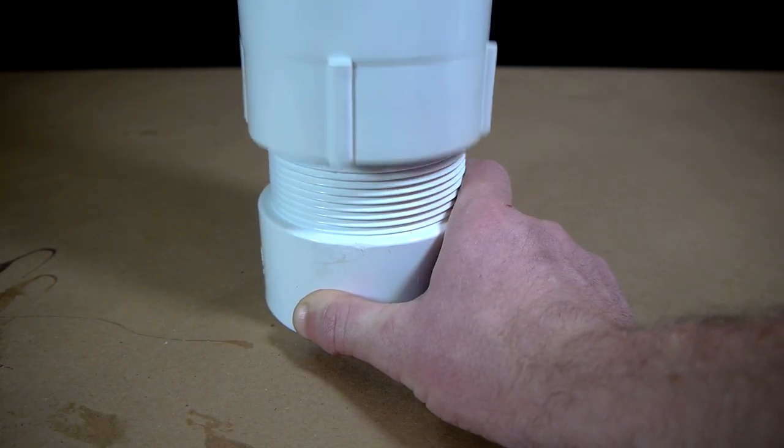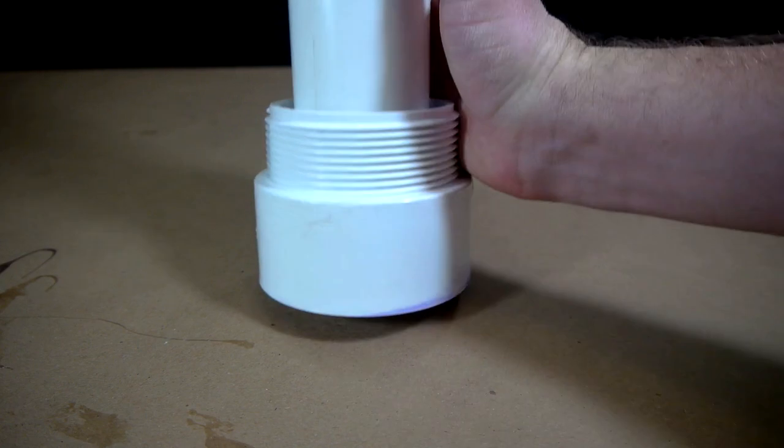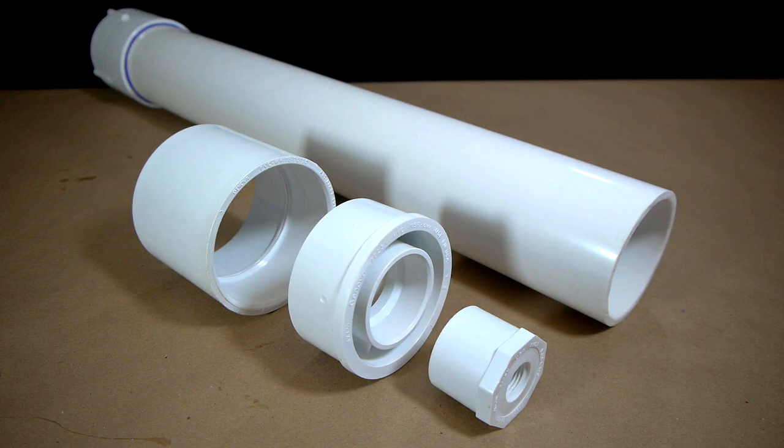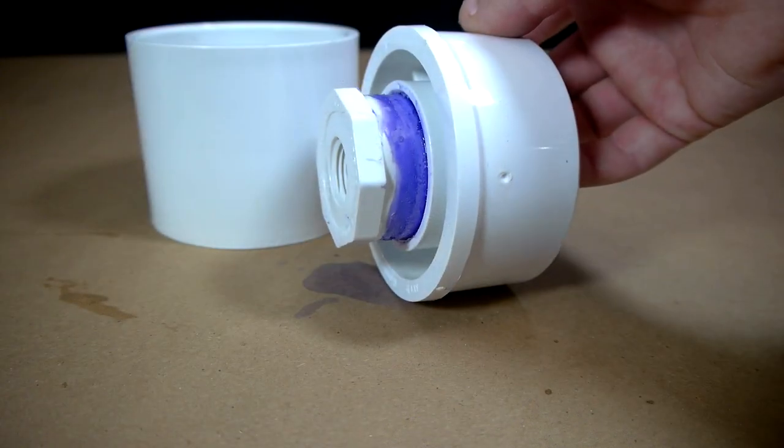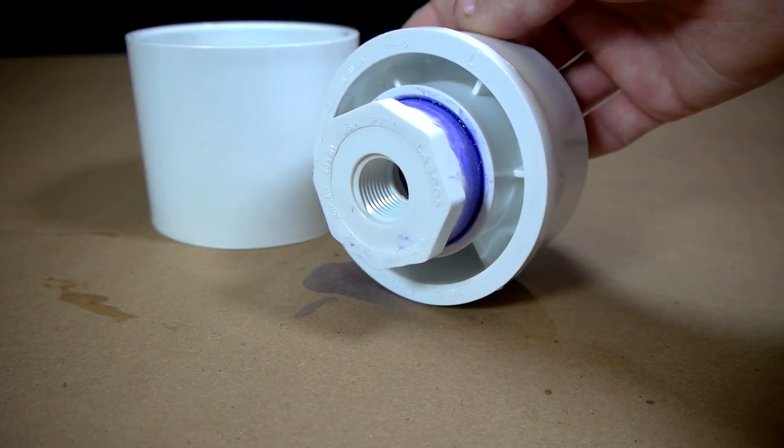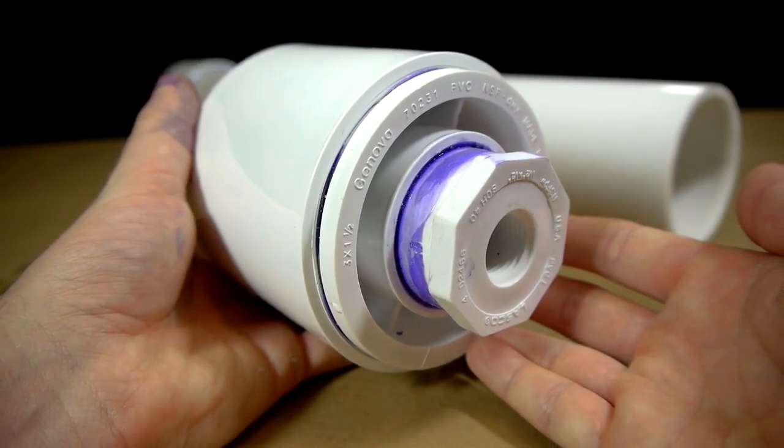The barrel can now be threaded off the chamber and set aside for later. Turning to the far end of the chamber, which will be the back side of the cannon, a series of fittings will be attached beginning with a 3 inch coupling. Into this coupling will be glued a 3 inch to 1.5 inch reducer, and into that an even smaller reducer going from 1.5 inches down to a threaded 1.5 inch opening.